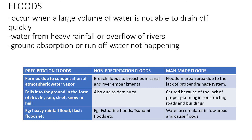The water falls to the ground in the form of drizzle, rain, sleet, snow, or hail. Examples of precipitation floods are heavy rainfall floods as well as flash floods that happen in India and other places. Non-precipitation floods happen because of breaches in canal and river embankments and the overflowing of canals and rivers. Examples include estuarine floods and tsunami floods — triggered by earthquake and detonation — as well as estuarine floods.